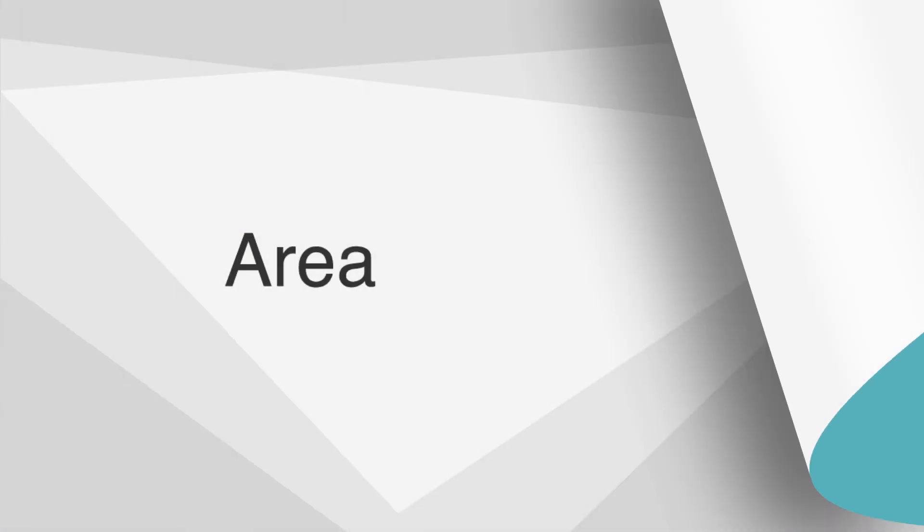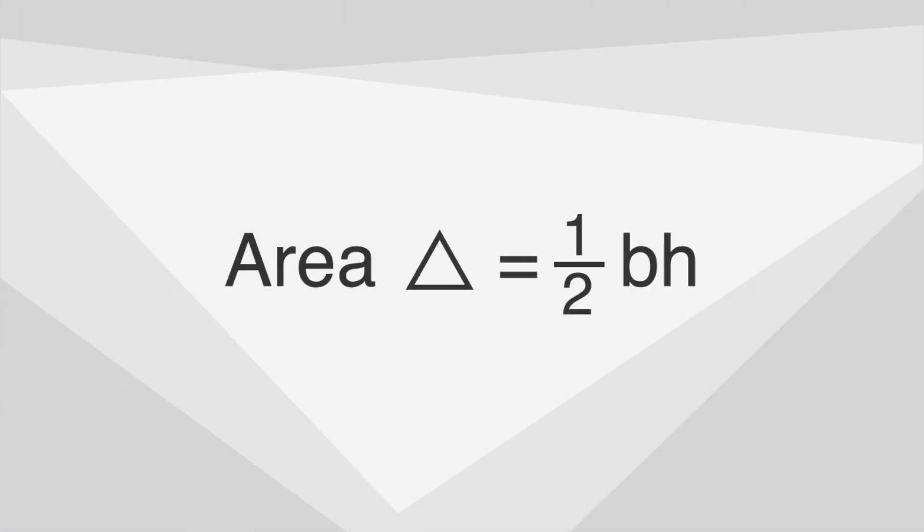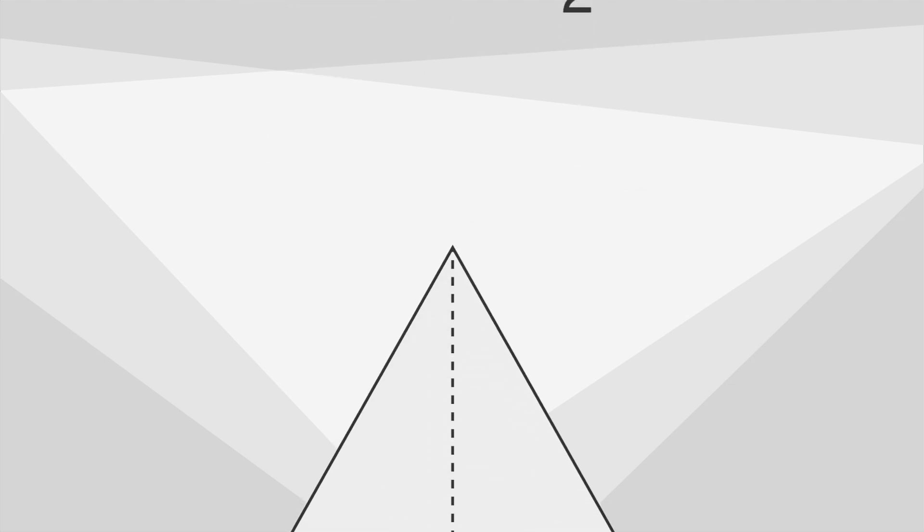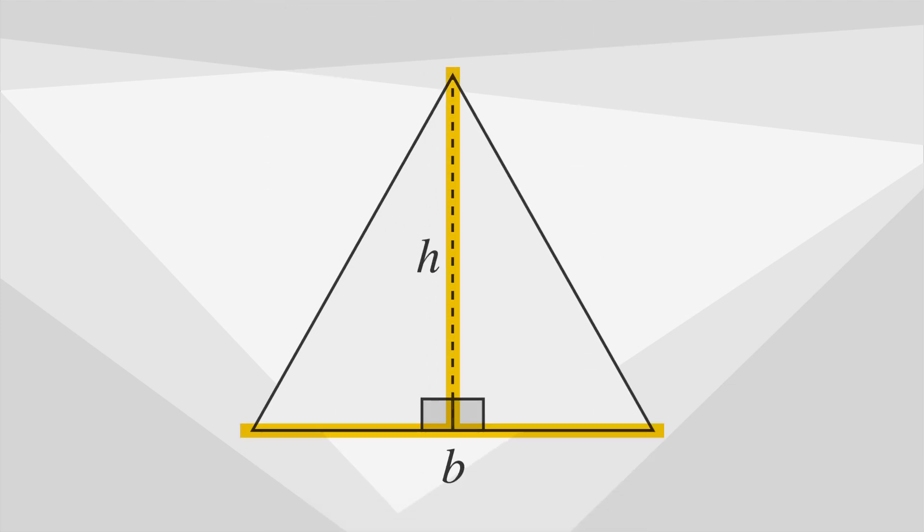Let's get started by talking about formulas. The area of a triangle equals one-half the base times the height. Remember that the base and height are always perpendicular to each other.